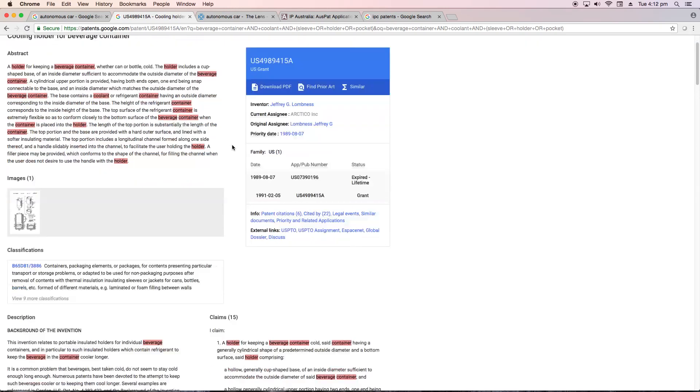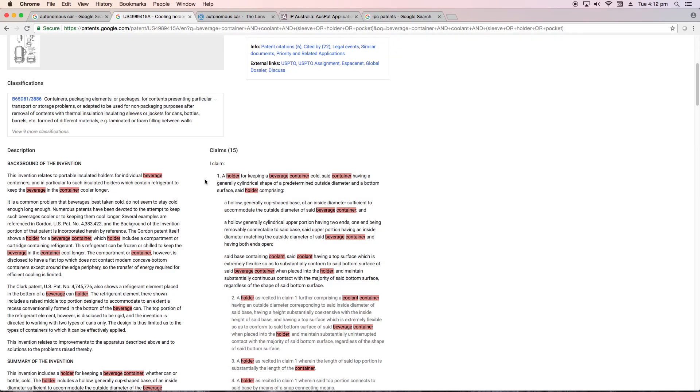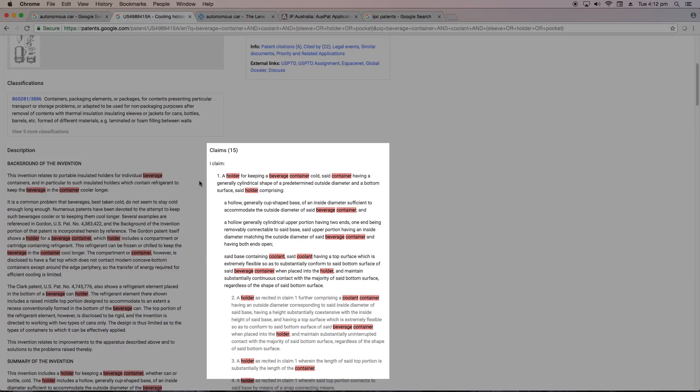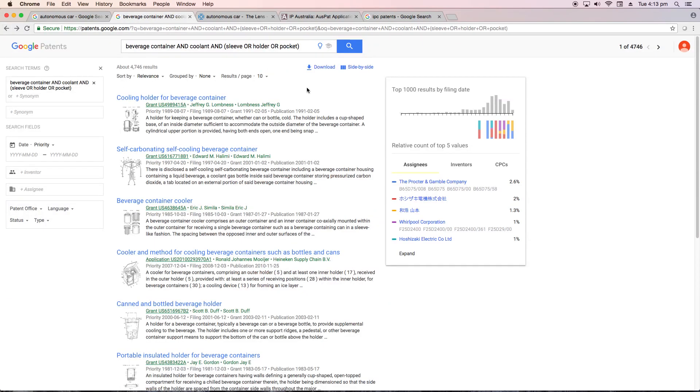If we scroll down the page, you'll see the description. This is the meat and bones of the application, which details exactly what the invention is and does. It's here you'll find the excruciating detail on how the invention works. And here on the right, we have the claims. The claims set out the legal boundaries of protection for a patent. They have to be clear, concise and distinguish the invention from what is already known. So that's what the result looks like. Now we've had a look at that, let's go back to the search results to see how we might refine our search.